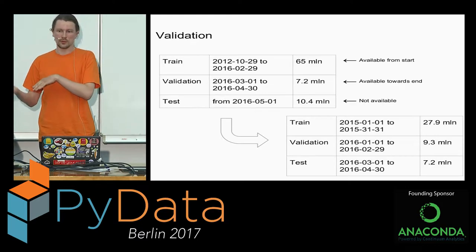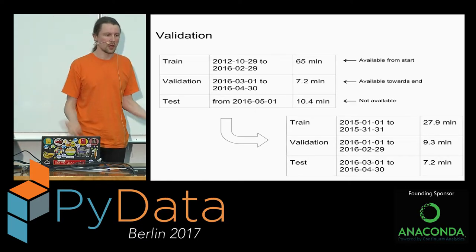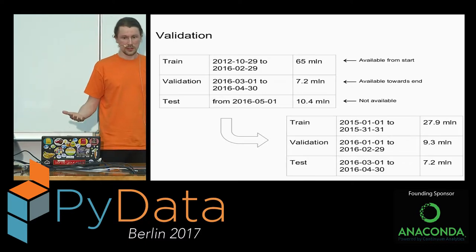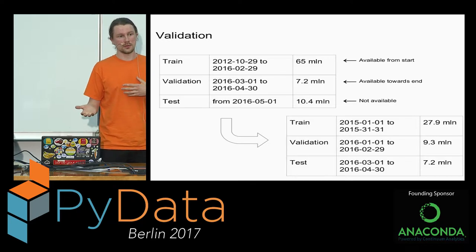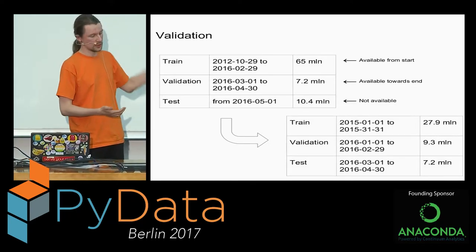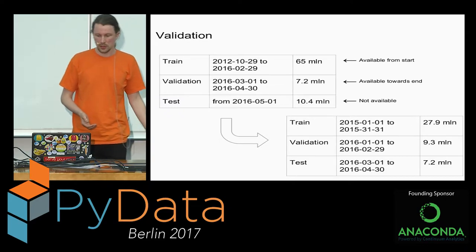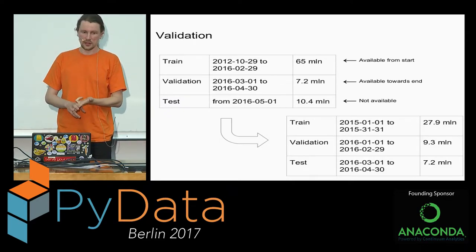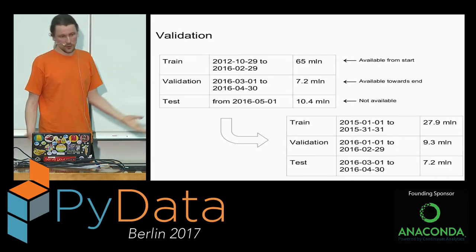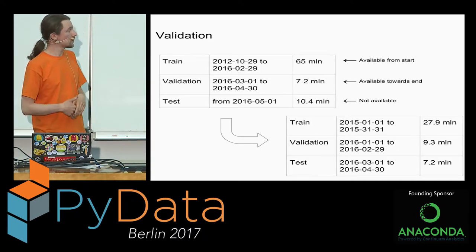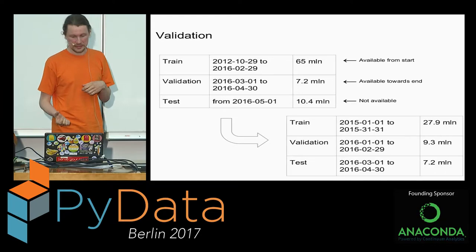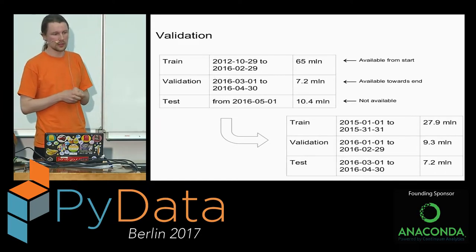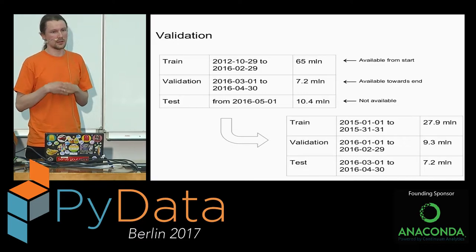Before starting to train a model, everyone should think about how to validate it. The organizers provided a split into three parts: train, validation, and test. But test was never released — it was only accessible through the virtual machine. So participants had train and validation data. I took this data and did my own split: I used validation data as test, and for training I took only the data for 2015.